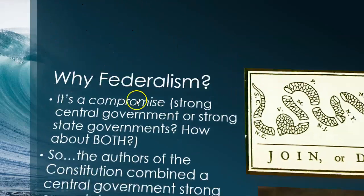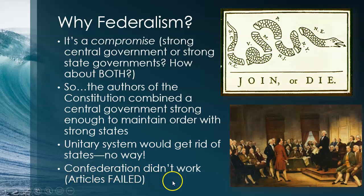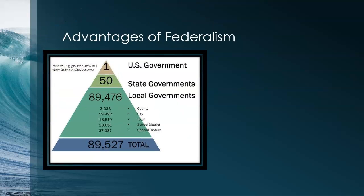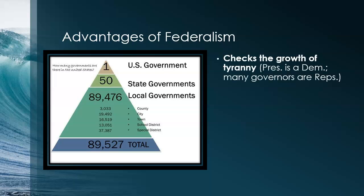The Articles of Confederation didn't work. The pendulum swung too far towards the states — just let the states do what they need to do with a weak central government — and that didn't work. Shays' Rebellion, trade wars, all the bad things that happened during the Articles of Confederation era. They tried to fix those, but they still needed the states to ratify the Constitution, and in order to do that they couldn't just take away the states. So that was one of the compromises at the Constitutional Convention.